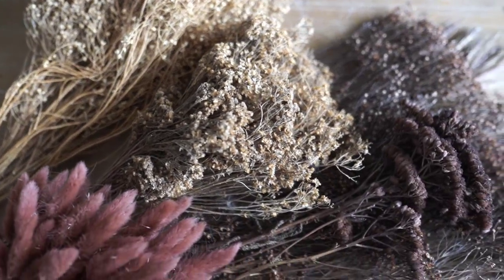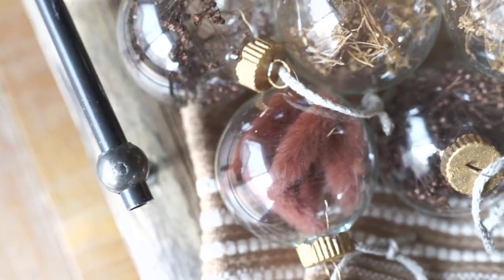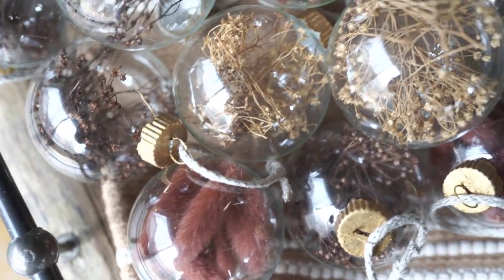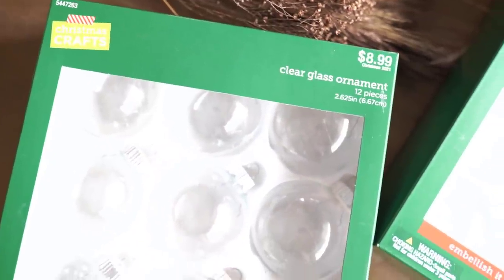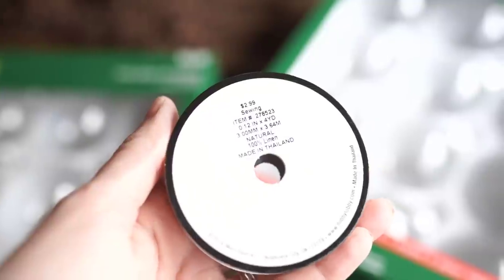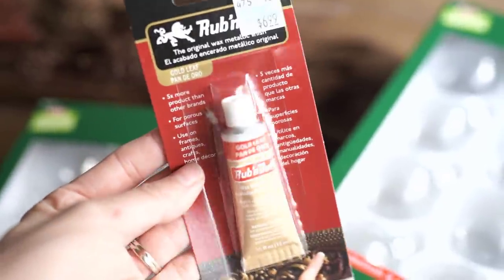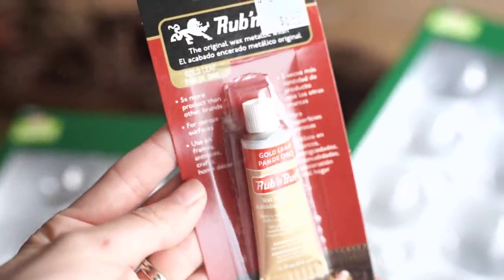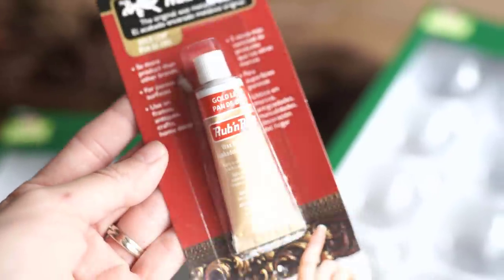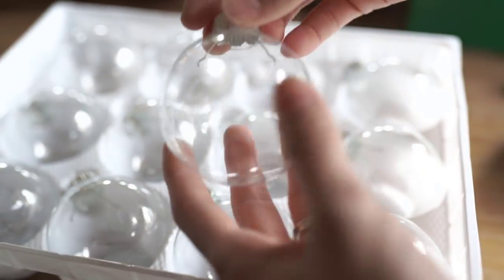Okay, so moving on to our first DIY, these are some dried floral ornaments. I originally saw this idea from Lorraine at Wellworn Interiors on Instagram. I picked up some clear glass ornaments from Hobby Lobby for $8.99 and then 50% off. I also picked up some 100% linen string for $2.99. I also grabbed some Rub and Buff in the gold leaf color, and a little goes a long way. This I used a lot on all of these ornaments you'll see today.